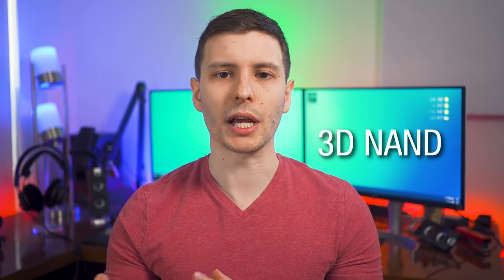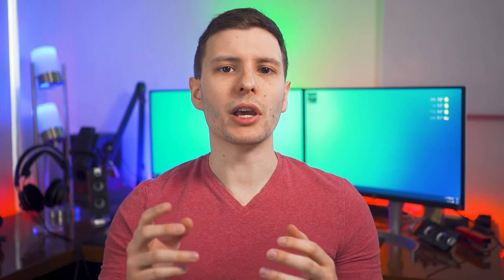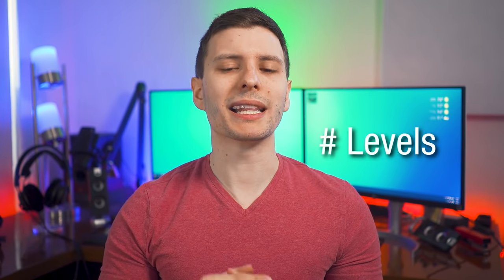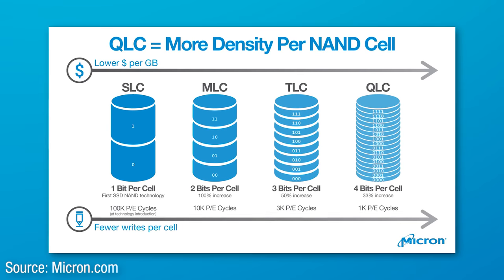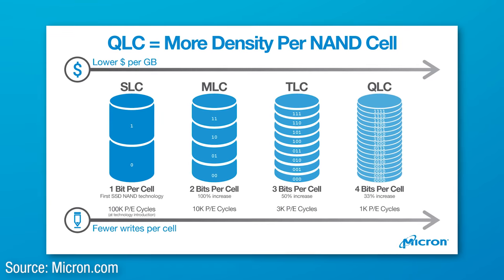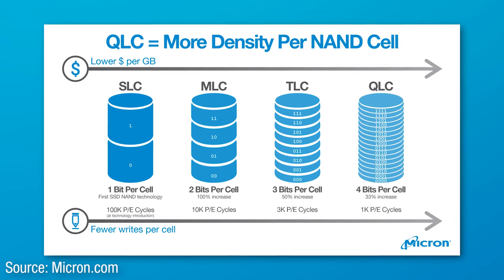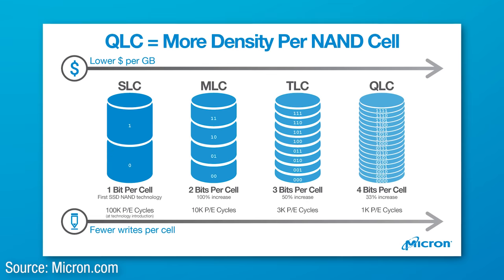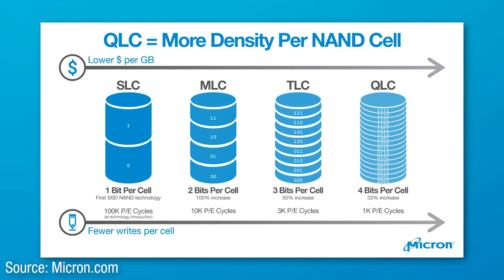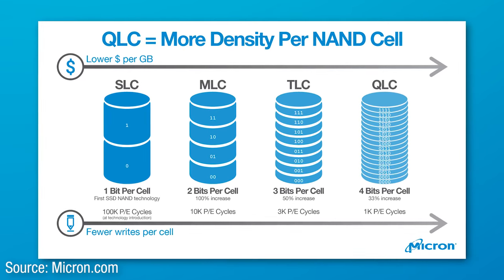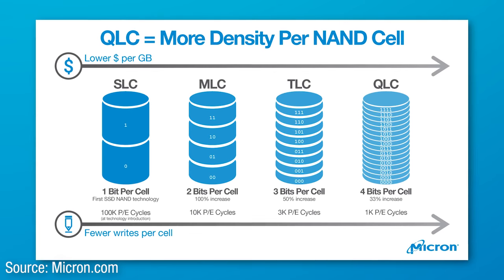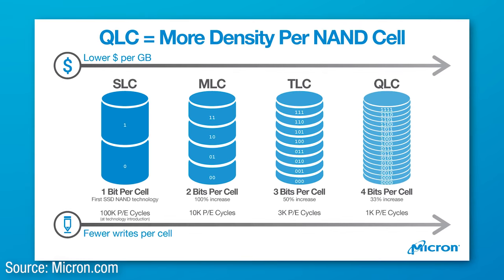The number of write cycles per cell on an SSD depends on a couple of factors. First, whether it's 3D NAND or not — NAND flash is the type of flash SSDs mostly use. The other factor is how many levels per cell. Today there are four different levels: SLC is single level cell, storing one bit per cell; MLC or multi-level cell is two bits; TLC or triple-level cell is three bits; and QLC or quad-level cell is four bits per cell.